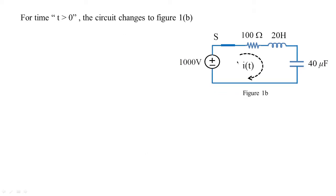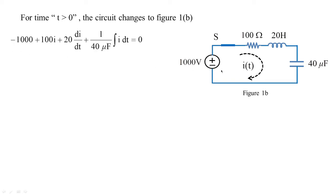For time t greater than zero, after the switch is closed, we apply Kirchhoff's voltage law. Starting from lower potential: minus 1000 volts, plus the voltage across the resistor which is 100i, plus the voltage across the inductor which is L·di/dt (L = 20), plus 1/C times the integral of i dt (C = 40 microfarads), equals zero. This is equation 5.